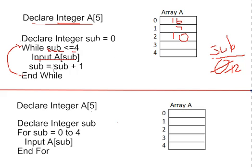Next statement, increment sub again, so sub will become three. We loop back up, test three is less than or equal to four is true. Input into A at three, so let's say eight was keyed in this time, so A at three will contain an eight.